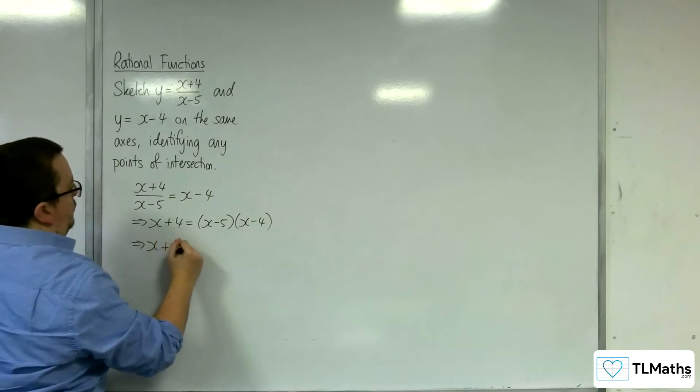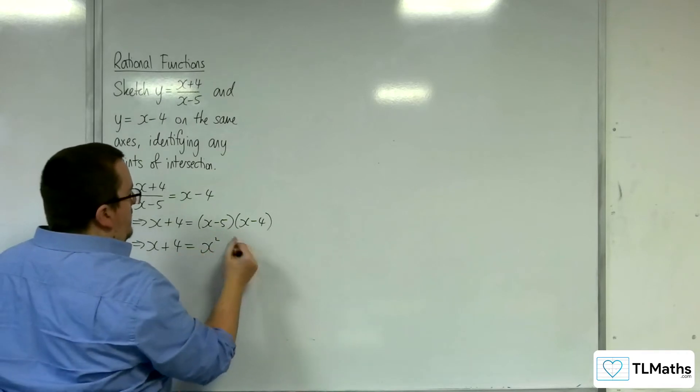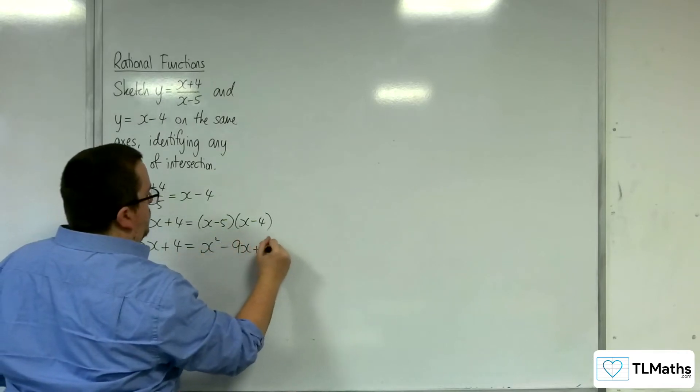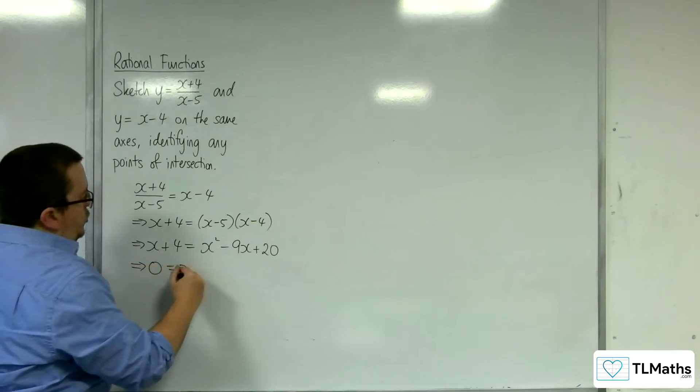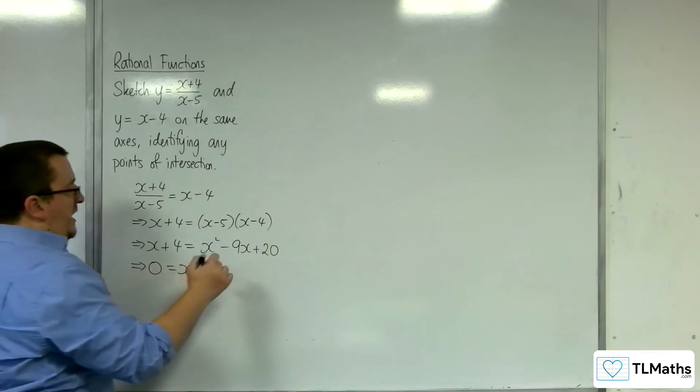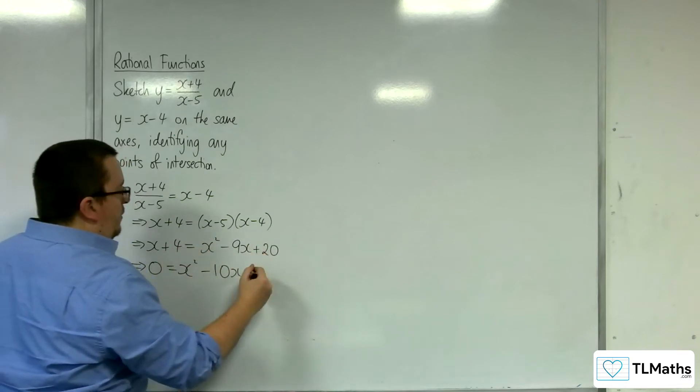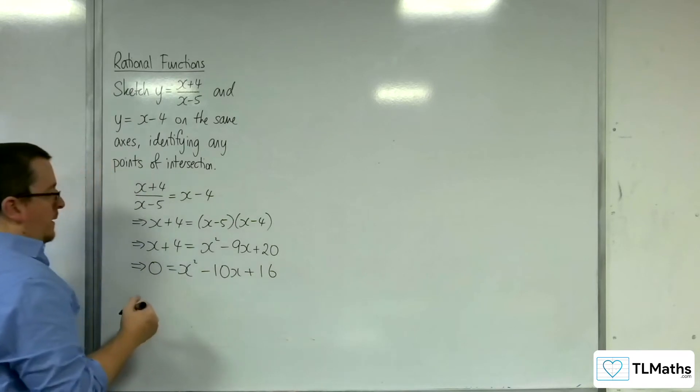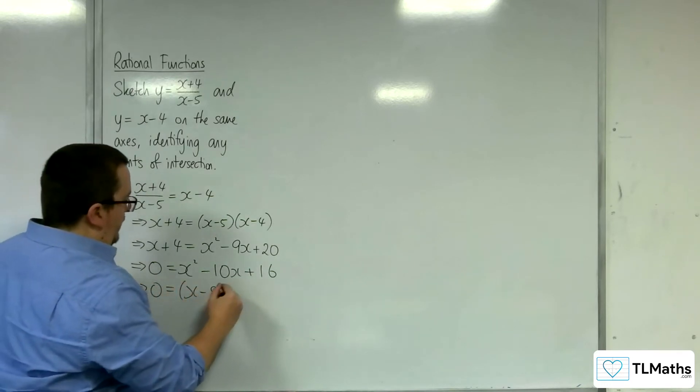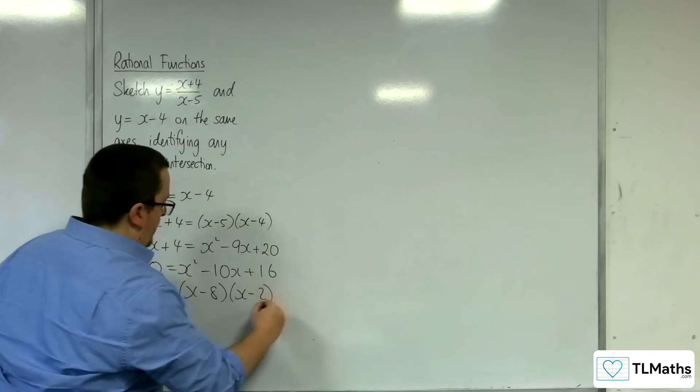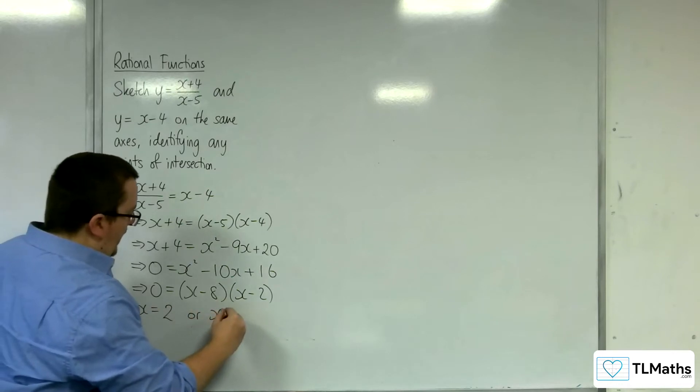So x plus 4 equals, we've got x squared, then we've got take away 9x plus 20. So I want to move everything on to the right-hand side of my equation. So x squared take away 10x, and 20 take away 4, so plus 16. So this factorizes to x minus 8, x minus 2. So we've got two points of intersection when x is 2 or x is 8.